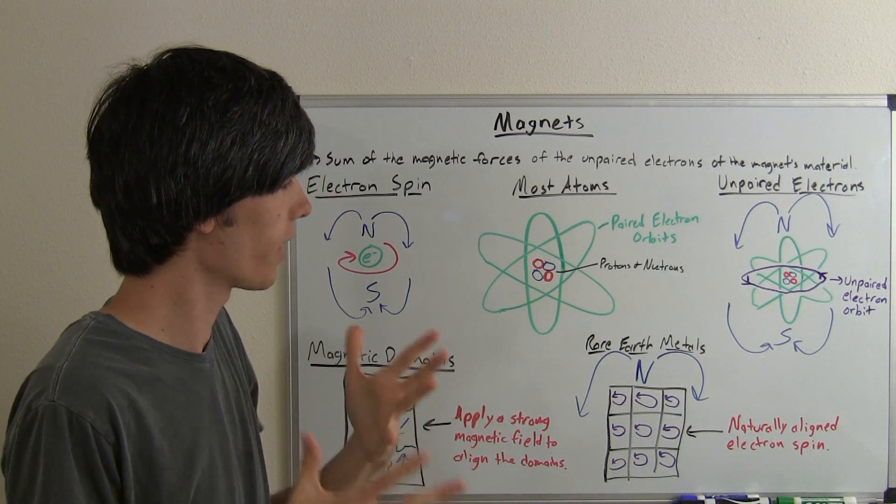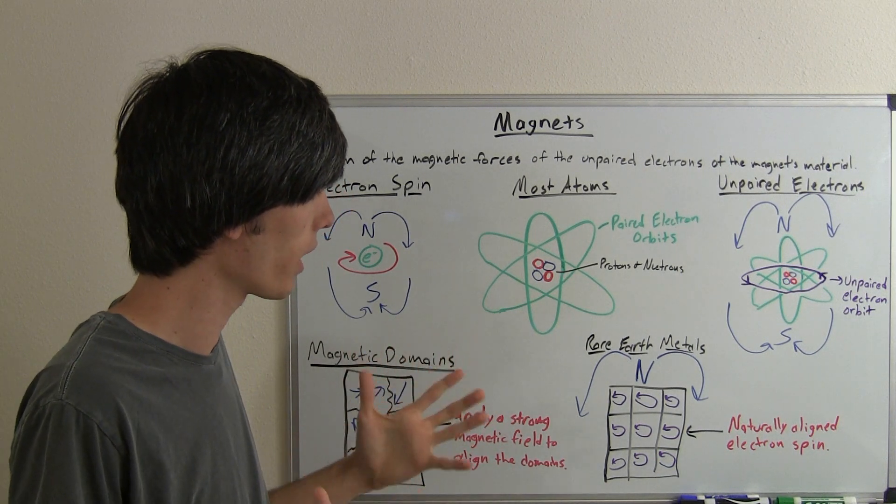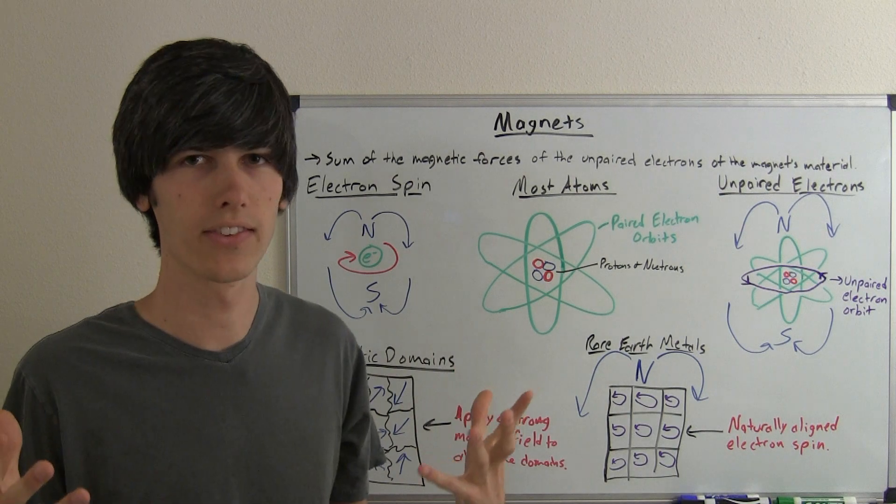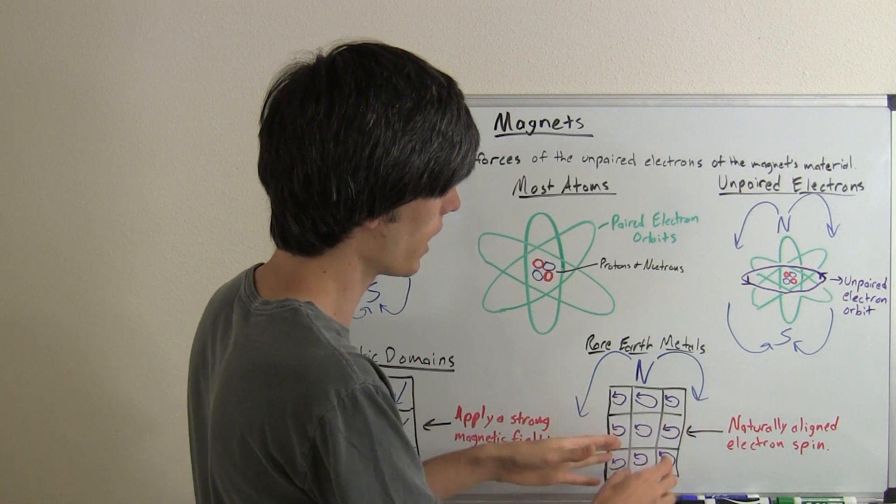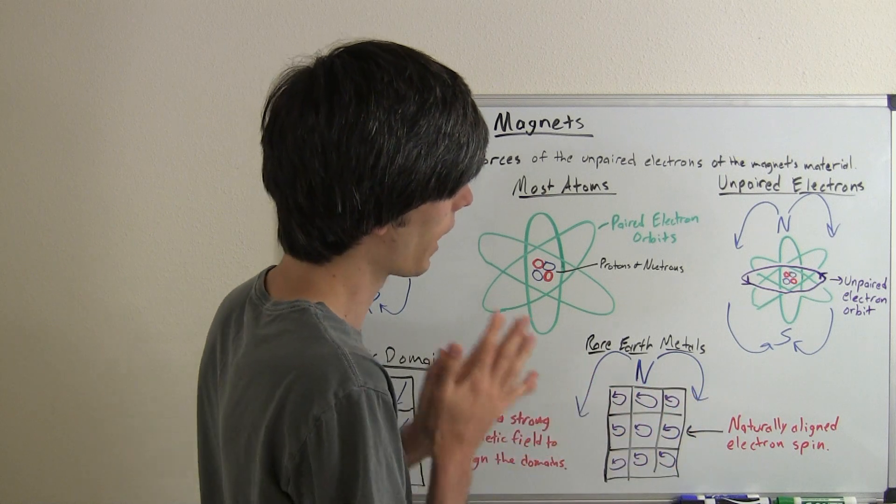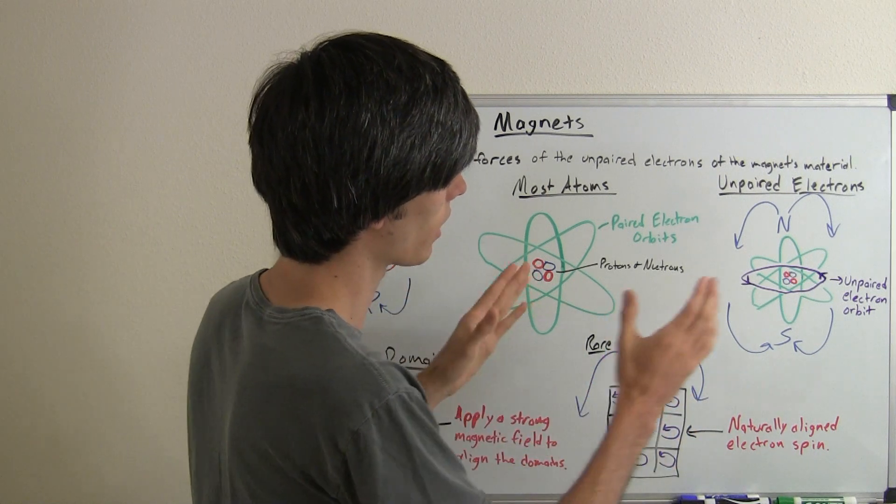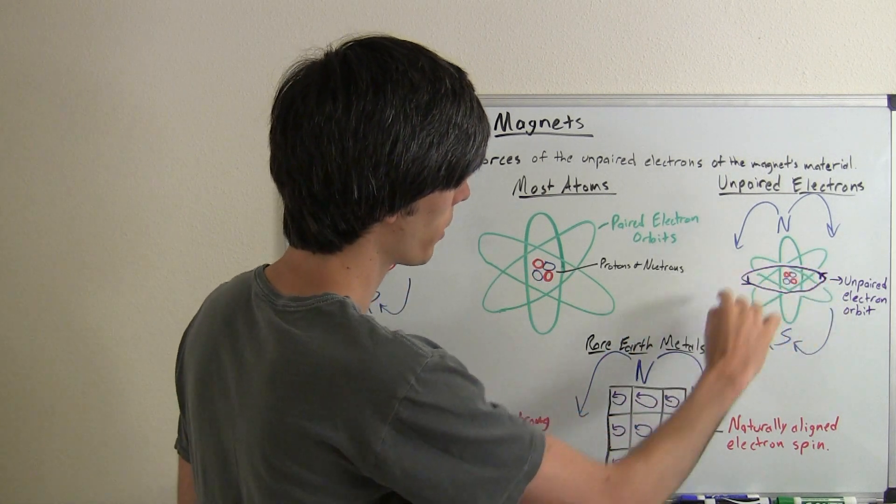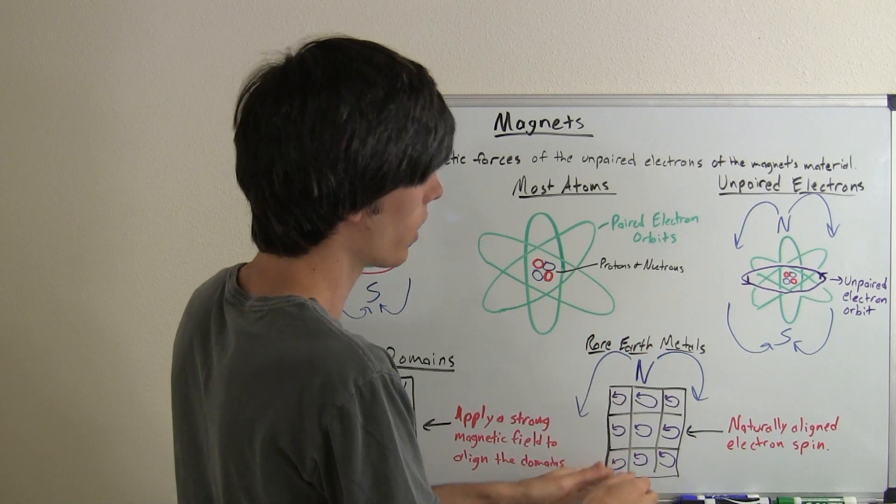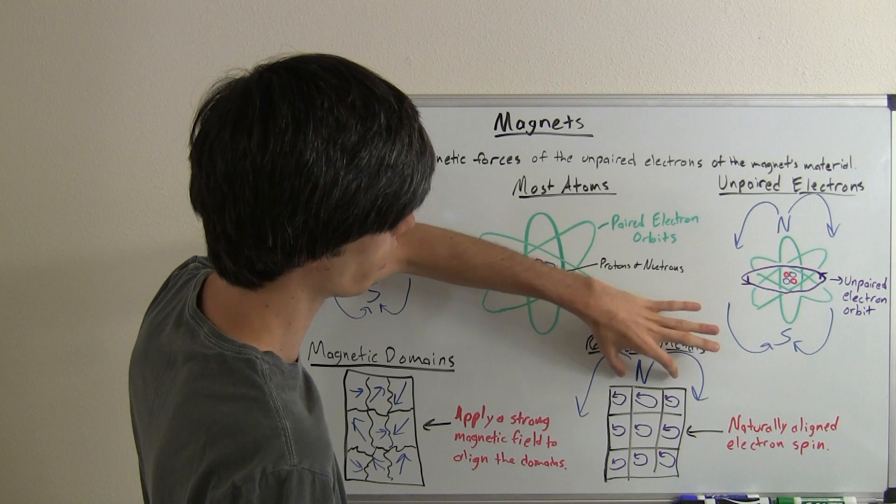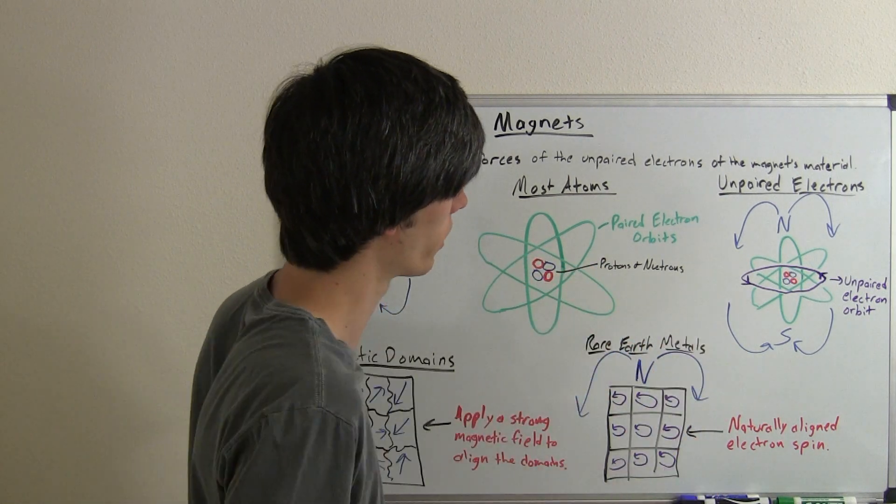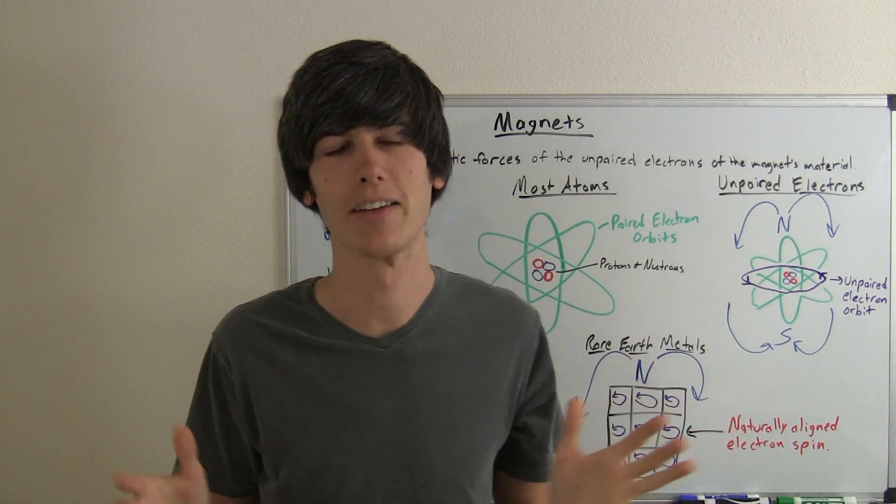So something that does occur naturally but is very rare, hence the name rare earth metals, is when these are naturally aligned in a material. So the unpaired electron orbits are all lined up, they all have the same spin orientation, and so thus there's a north pole created on one side and a south pole created on the other side and you have a magnet.